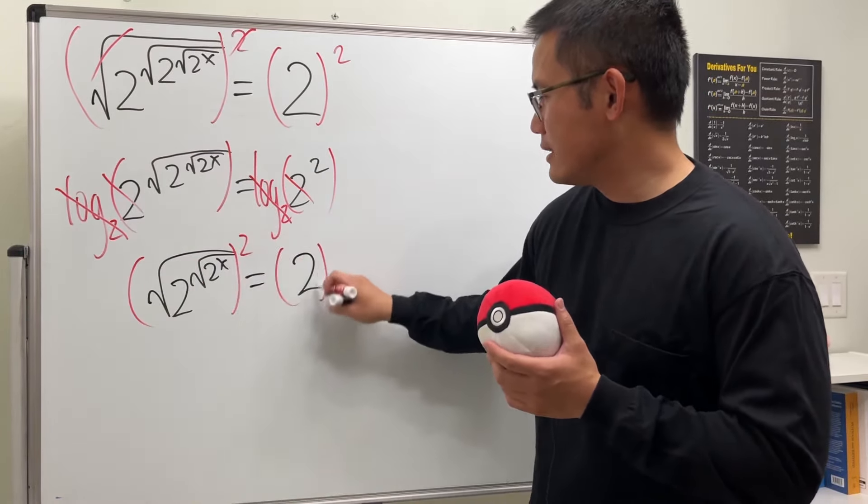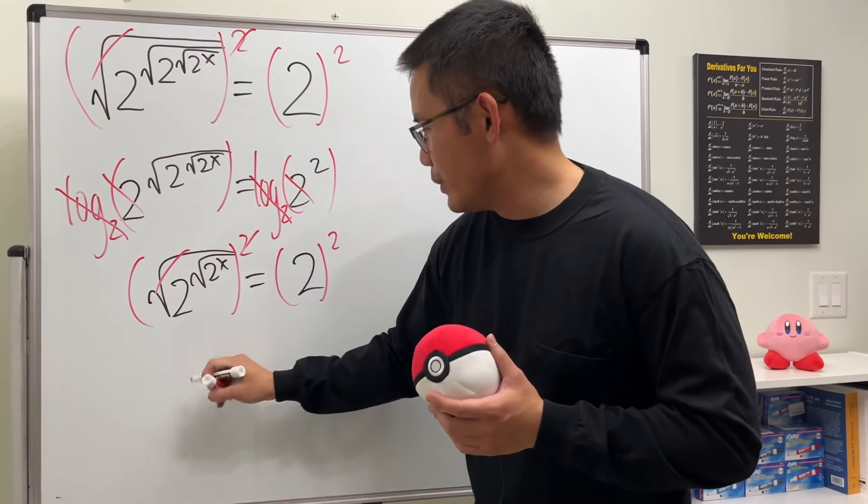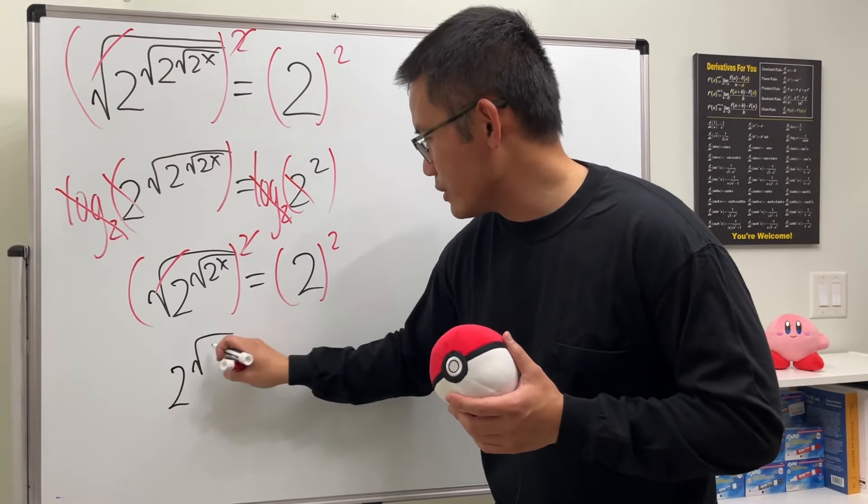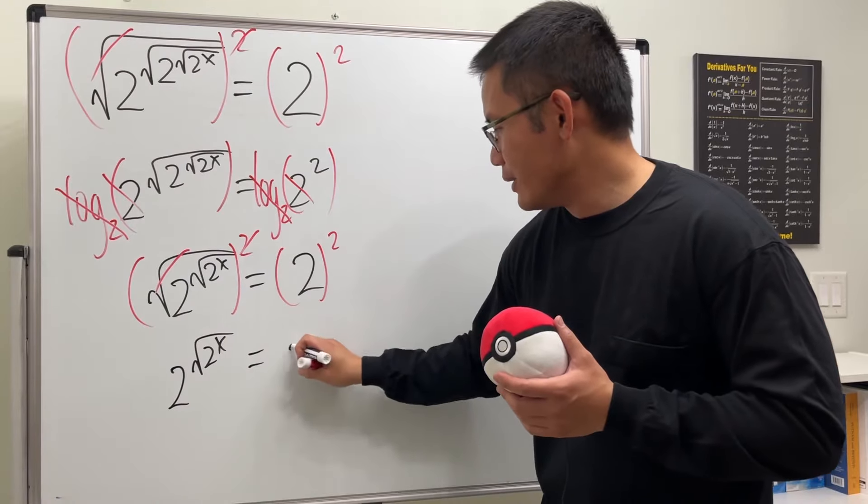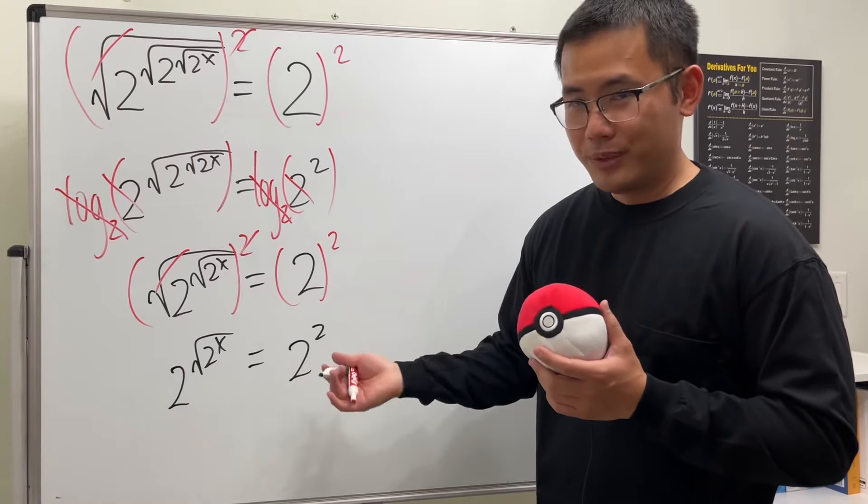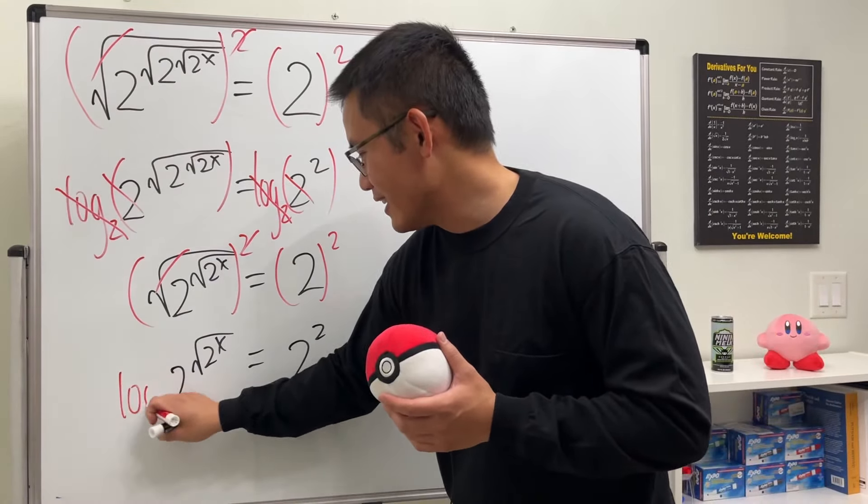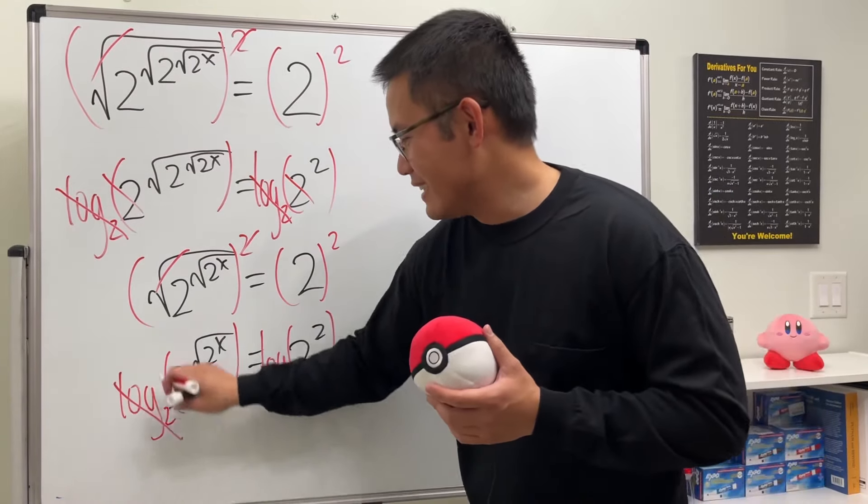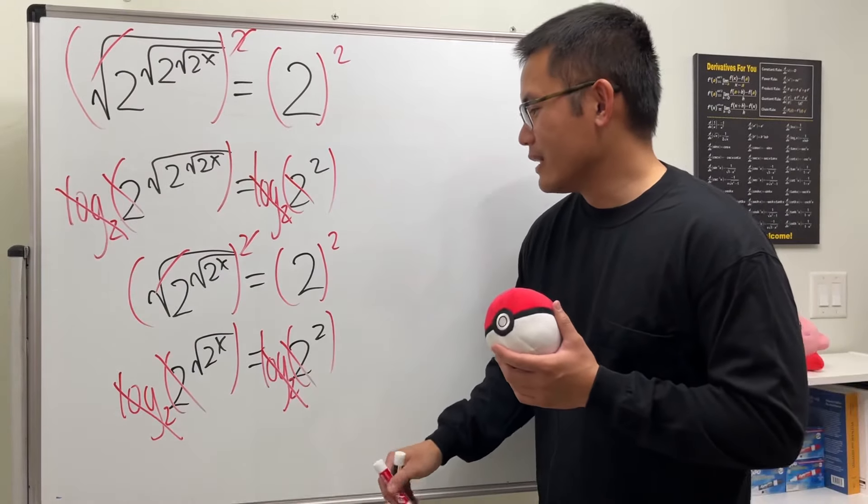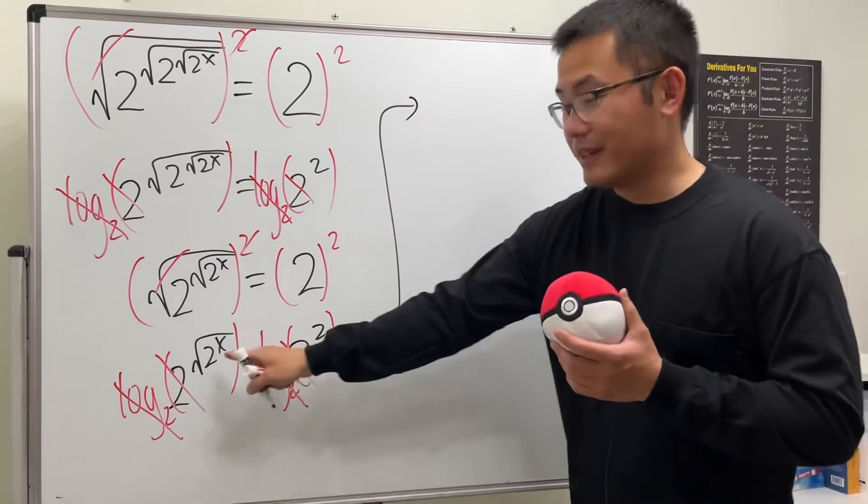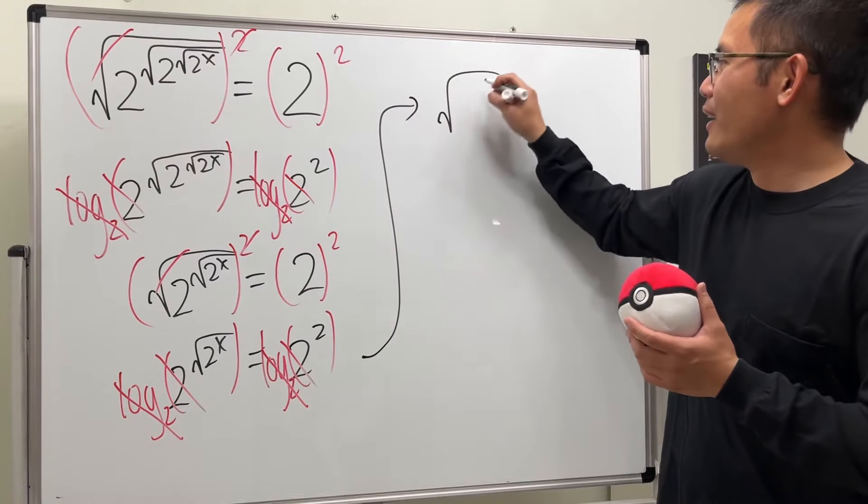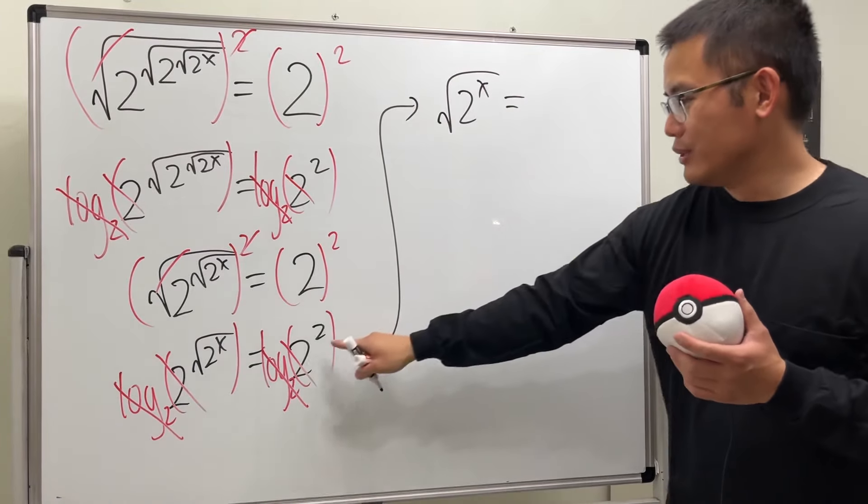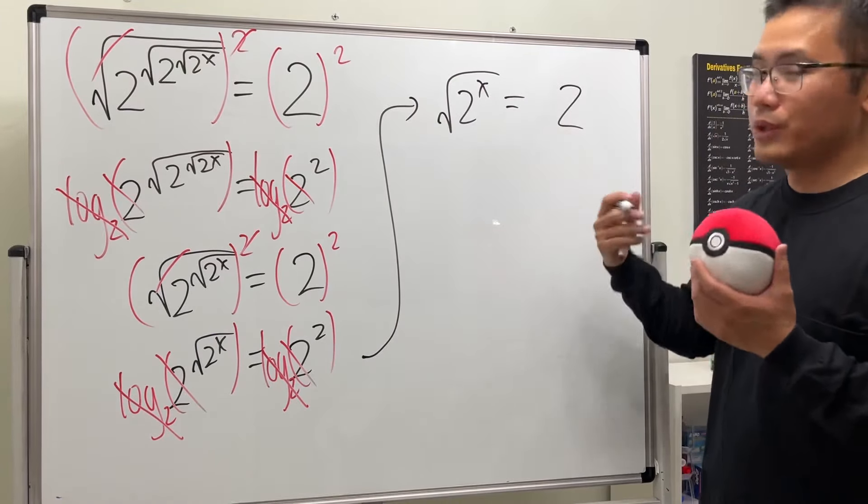And what do we do next? Yes, square both sides, cancel, and then we get 2 to the square root of 2 to the x and that's equal to 2 to the 2 to the 2. What do we do next? Yes we take log base 2 on both sides. So what do we get? This and that cancel, this and that cancel, so we are going to have square root of 2 to the x being equal to just this 2 here.